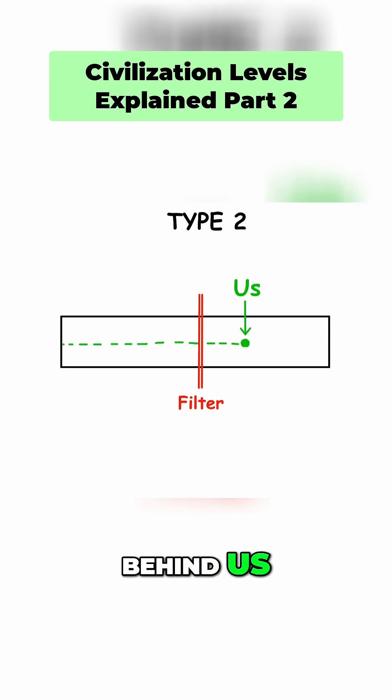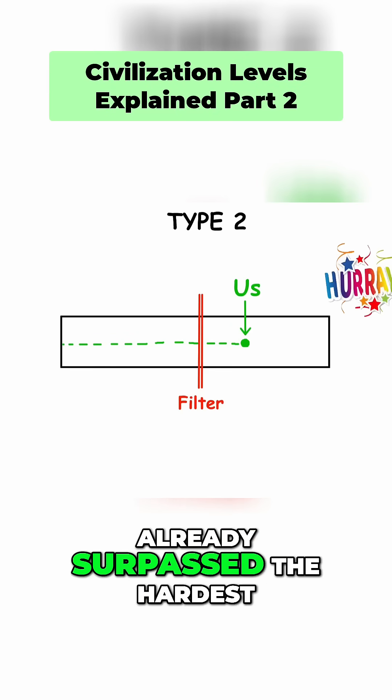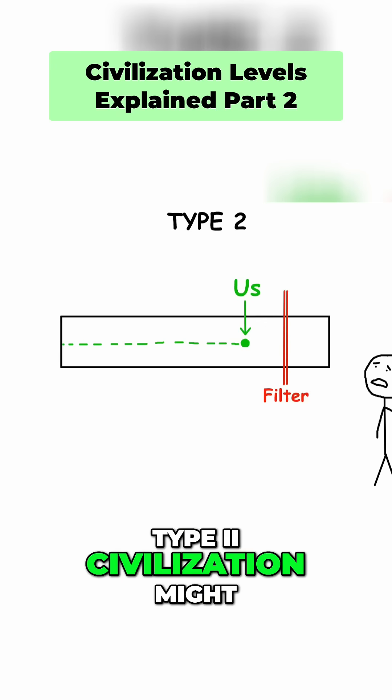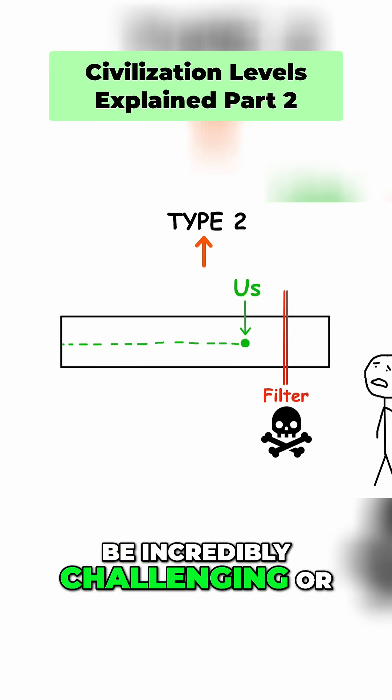This filter could lie behind us, meaning that humanity has already surpassed the hardest part of becoming advanced, or it could be ahead of us, indicating that reaching a Type 2 civilization might be incredibly challenging or even impossible.